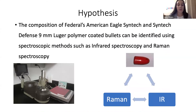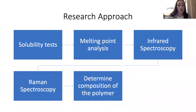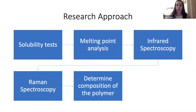Methods such as infrared spectroscopy and Raman spectroscopy can be used to determine the composition of the polymers. These two methods will provide insight into both the IR-active and Raman-active bonds present in the polymers. First, the melting point and solubility of the polymers were determined. To determine the melting point, a piece of each polymer was shaved off and, with the use of a hot stage attached to a microscope, the melting point was determined. Similarly, to determine the solubility, a piece of each polymer was shaved off and placed into various solvents. Then each polymer was analyzed using IR spectroscopy. Unfortunately, due to recent circumstances, the polymers cannot be analyzed using Raman spectroscopy.